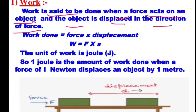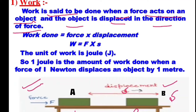For example, we have a wooden block lying on a table at point A. We apply force F on the block and the block moves through a distance S, covering some displacement, and reaches point B. The work is done because our muscular force is acting on the block and the block is moving through some distance. So the work done can be calculated simply by multiplying force and displacement: W = F × S.